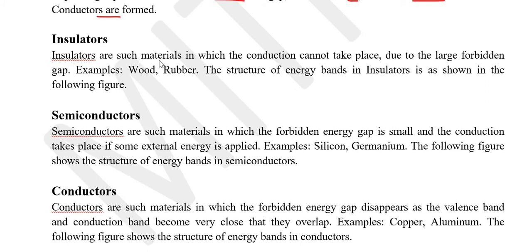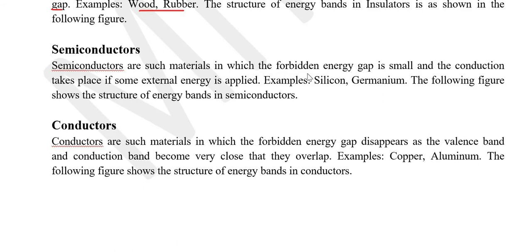Insulators are such materials in which conduction cannot take place. These are materials in which conduction does not occur due to the large forbidden gap — examples are wood and rubber. Semiconductors are materials in which the forbidden energy gap is small and some amount of conduction can take place, especially if some external energy is provided — examples are silicon and germanium. Conductors are those in which the forbidden energy gap is very small or negligible — examples are copper and aluminium.